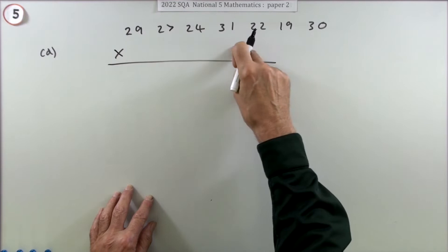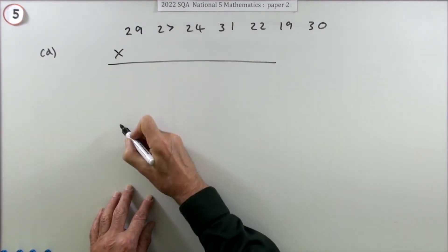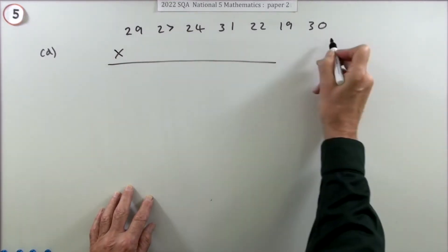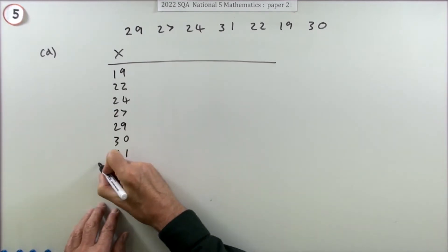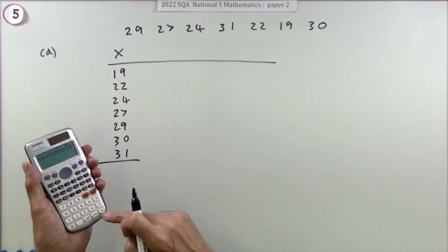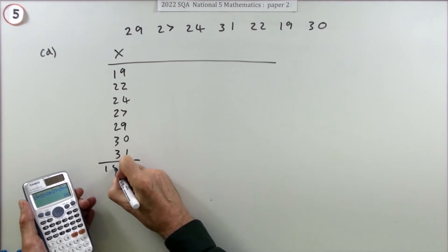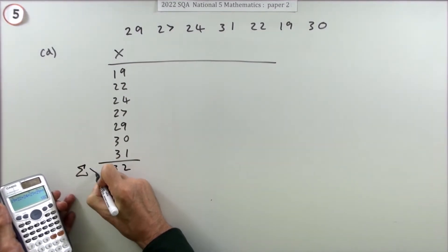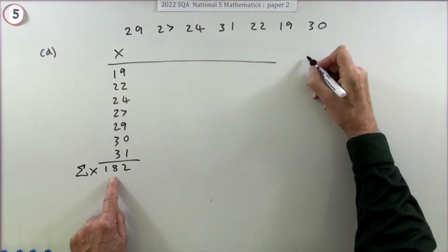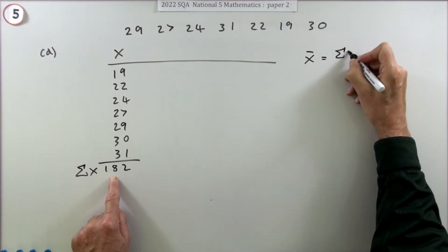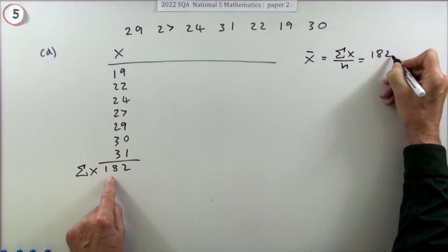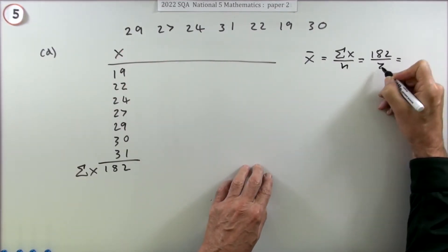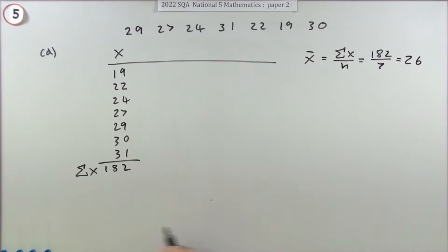I'll set up a table with the x values. I prefer to put them in numerical order because it makes the next bit neater. Adding them all up gives 182 - that's the sum of the x's. To get the mean: 182 divided by 7, which gives 26. So the mean is 26 - that's the first mark.